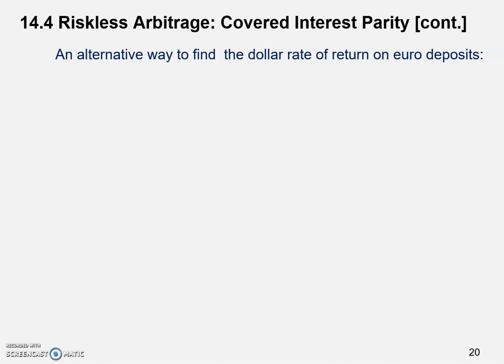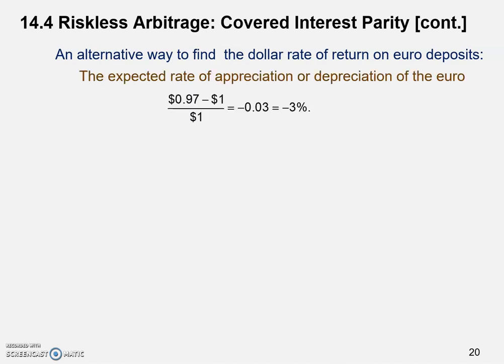We also want to discuss an alternative way to find the dollar rate of return on euro deposits. This alternative is an approximation. The expected rate of appreciation or depreciation of the euro can be calculated as (0.97 − 1) ÷ 1 — starting with $1 per euro today, it becomes 97 cents per euro a year later, giving us minus 3%. The minus sign means it's a depreciation of the euro — the euro is worth 3% less a year later.